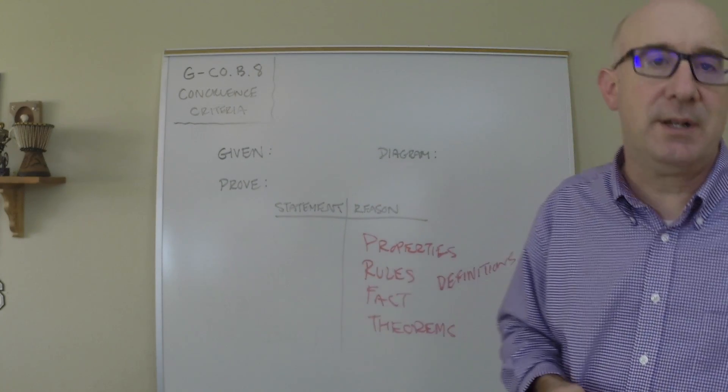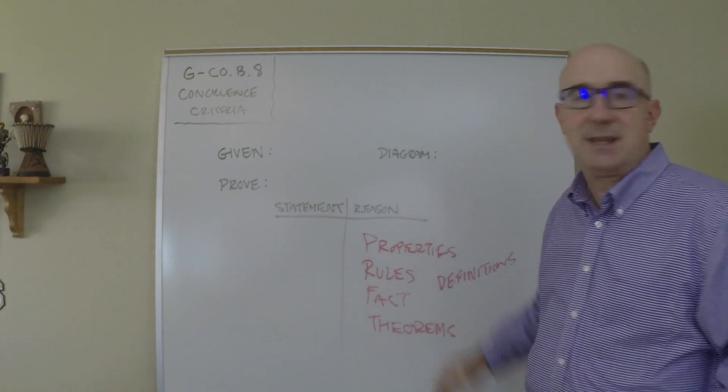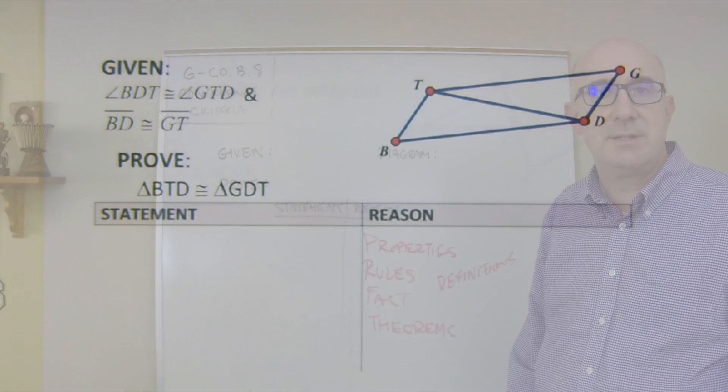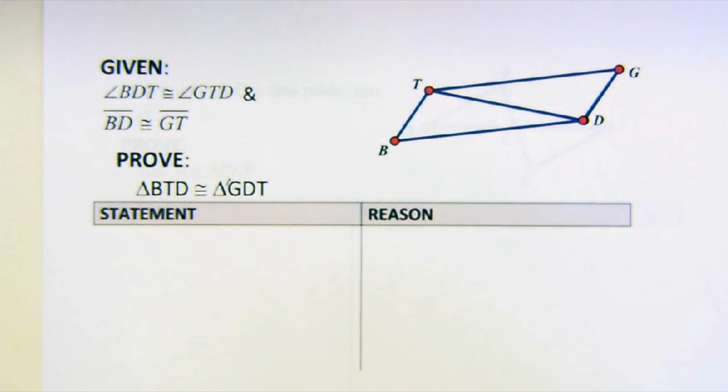So I'll show you a couple examples, some very simple starter proofs that we'll make statements, and then we'll back them up with some reasons. So let's look at a couple of these up close. Again, the format is given the proof, what they want you to prove, and then a diagram that usually helps you to make some decisions.